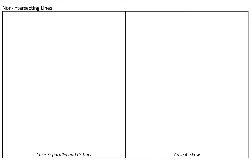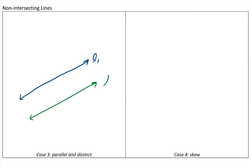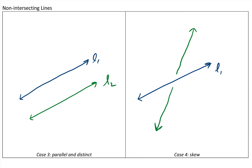For non-intersecting lines, we have two scenarios. The first is that they're parallel and distinct — line two is parallel to line one and they never intersect. The second are what we call skew lines. Line two may look like it intersects if you look from a top view, but there's some distance between the two lines, and therefore they don't intersect. We call these skew lines.